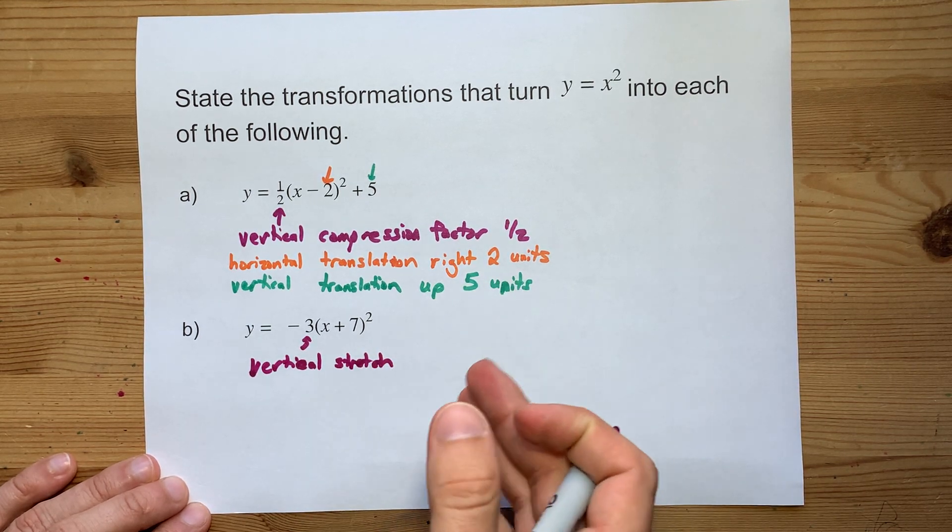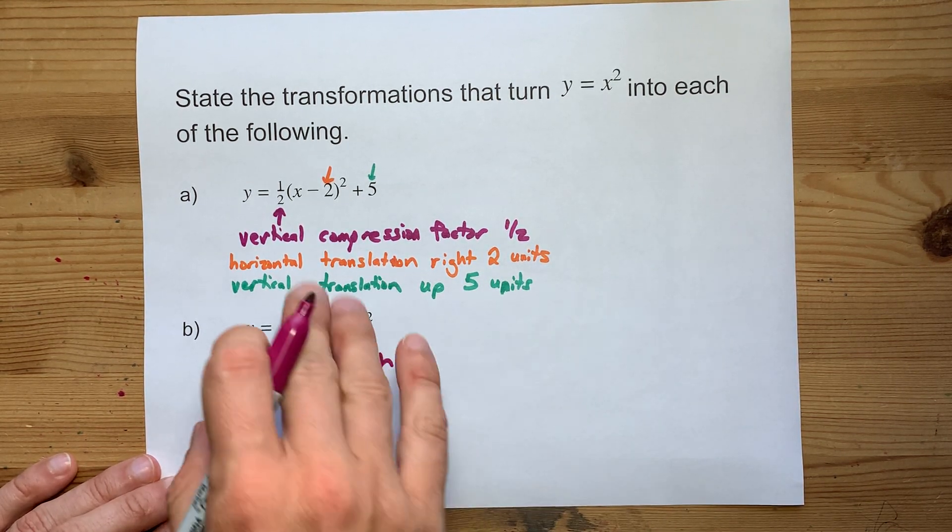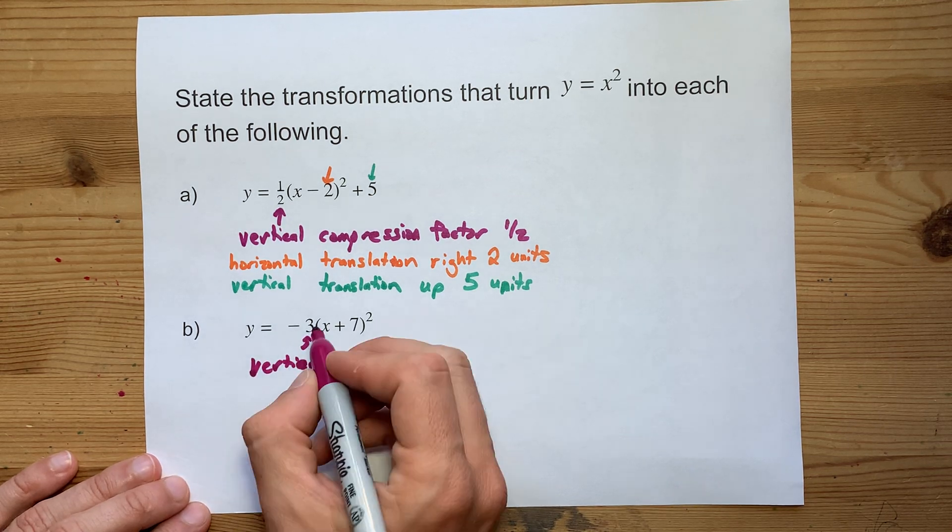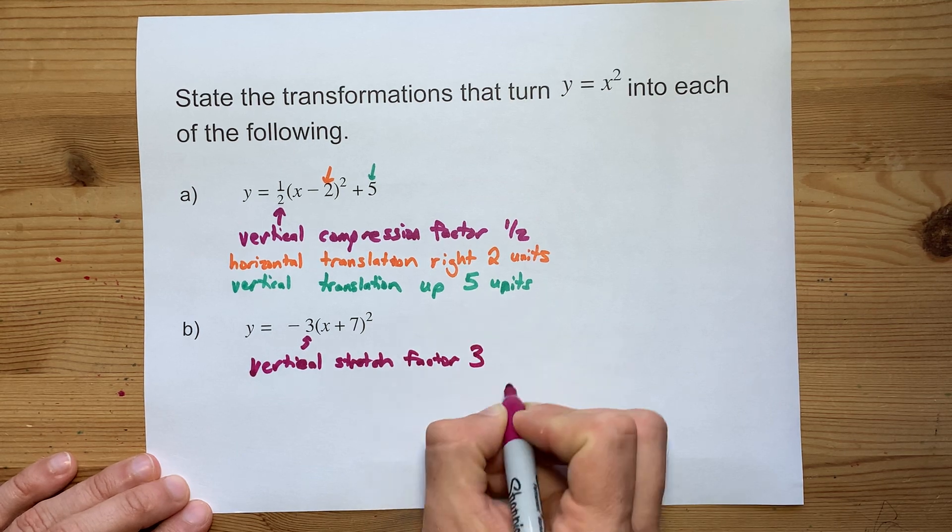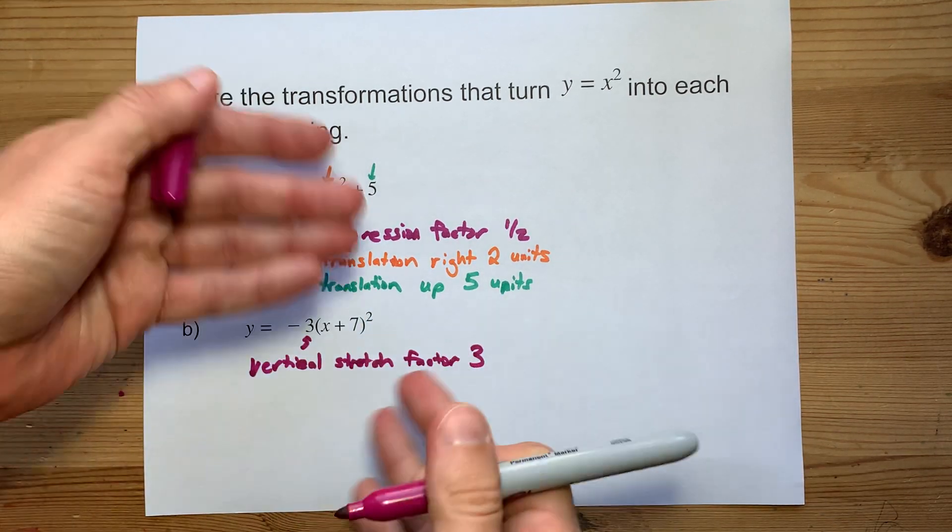Remember, 1 is the threshold. Bigger than 1 is a stretch. Less than 1 is a compression when it comes to vertical stretches and compressions. And we want you to say that it's a factor of 3 because you're basically multiplying your heights by 3.